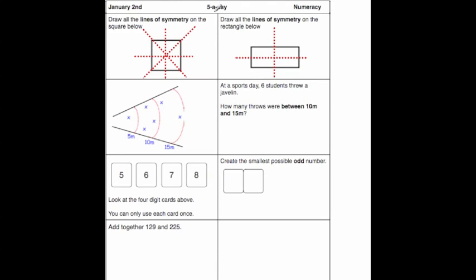Welcome to the January 2nd five a day solutions for numeracy. The first question says draw all the lines of symmetry onto the square below and I've already done this. You've got the vertical one, the horizontal one, one diagonal and the other diagonal, so there are four lines of symmetry for a square.